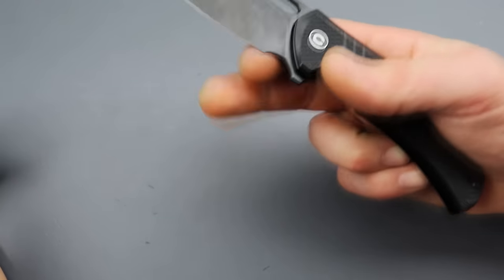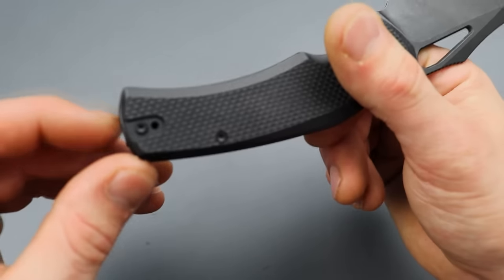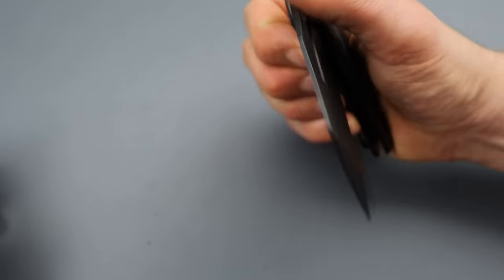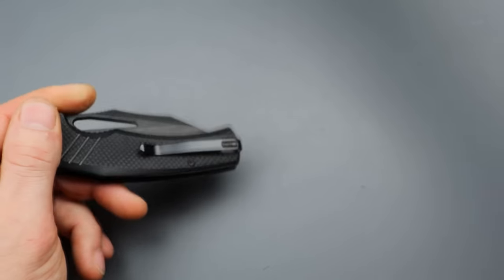And, you know, it's a super solid user. 14C, 28N blade steel deep carry clip that is reversible, inset with flat screws. Love to see that. TA hardware all the way around. Now, I personally think that the Tranquil is a little bit better.